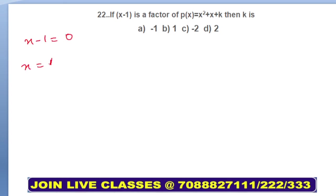Putting the value of x in the equation: 1² + 1 + k = 0, so k comes out to be -2. Option C, k = -2.